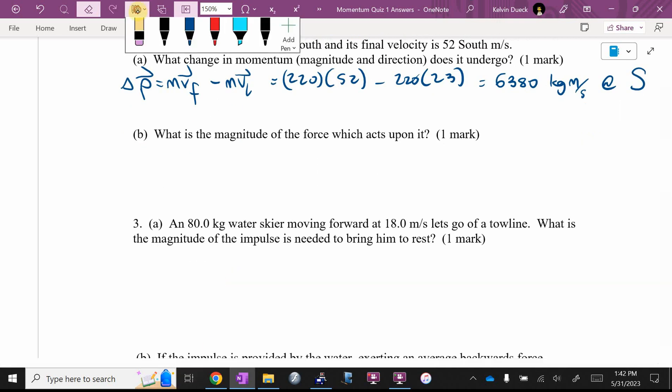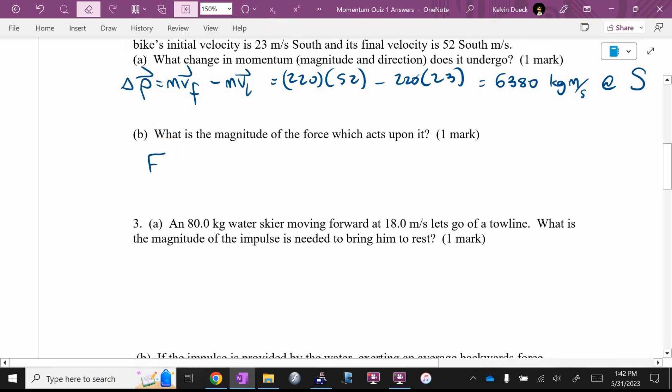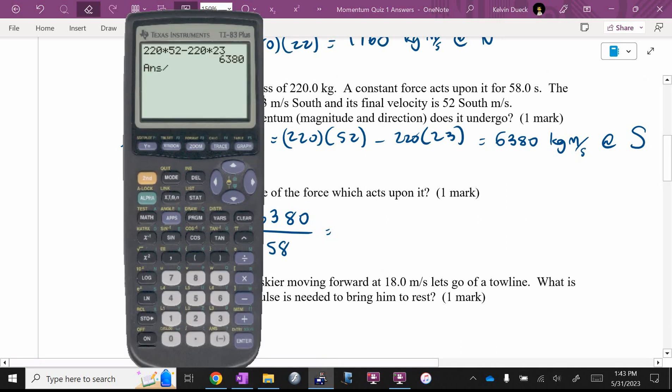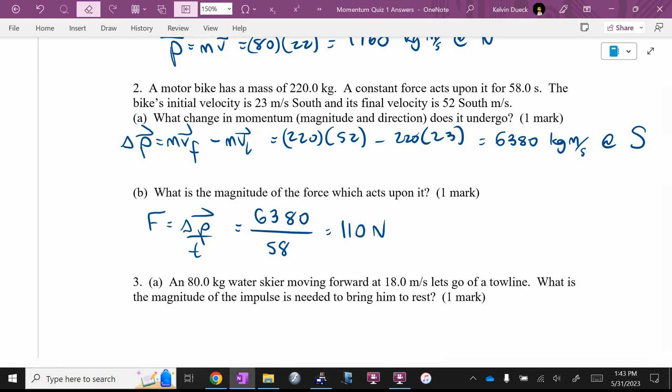What's the magnitude of the force? You could go F equals MA. I chose to say force is also impulse over time. I looked at F times T equals delta P and got the F by itself. I can say 6,380, my answer from part A, divided by 58 seconds. And I got 110 newtons. Did they say magnitude and direction in part B? Magnitude only. If you wanted me to give a direction, I think south, because that's what the change in momentum was.